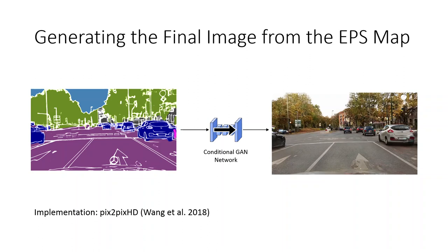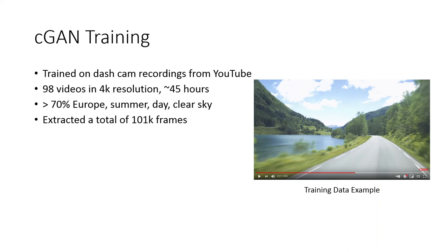Now that we have the EPS map as intermediate representation, it is used in the second step to create the final output image. To this end, we utilize a conditional GAN for the image-to-image transfer. GANs have a rich history in style transfer and domain-shift applications, and thus we again rely on a proven solution for this task: the Pix2Pix HD architecture by Wang et al. It takes the EPS map as input and produces a realistic looking image in the target domain. Please note that at this step in the pipeline, the original input image is not used at all.